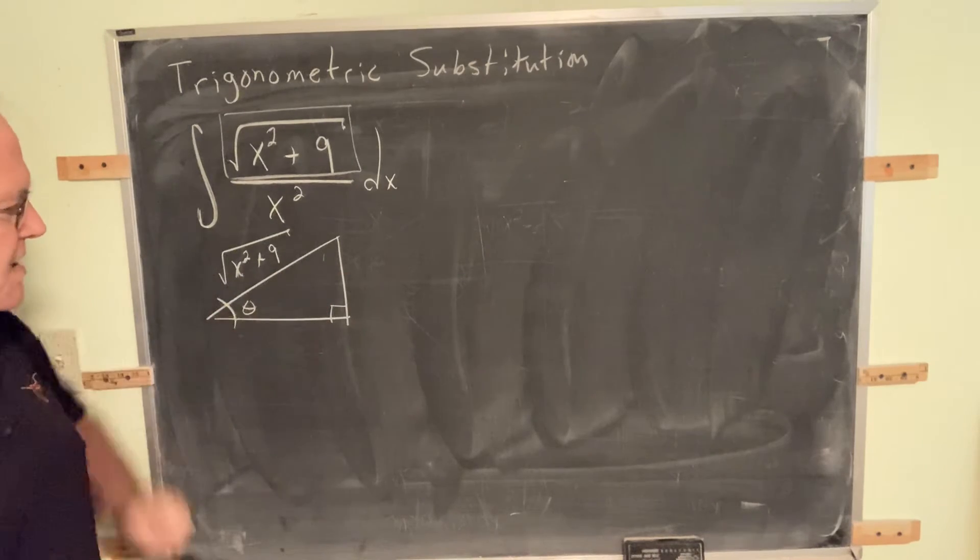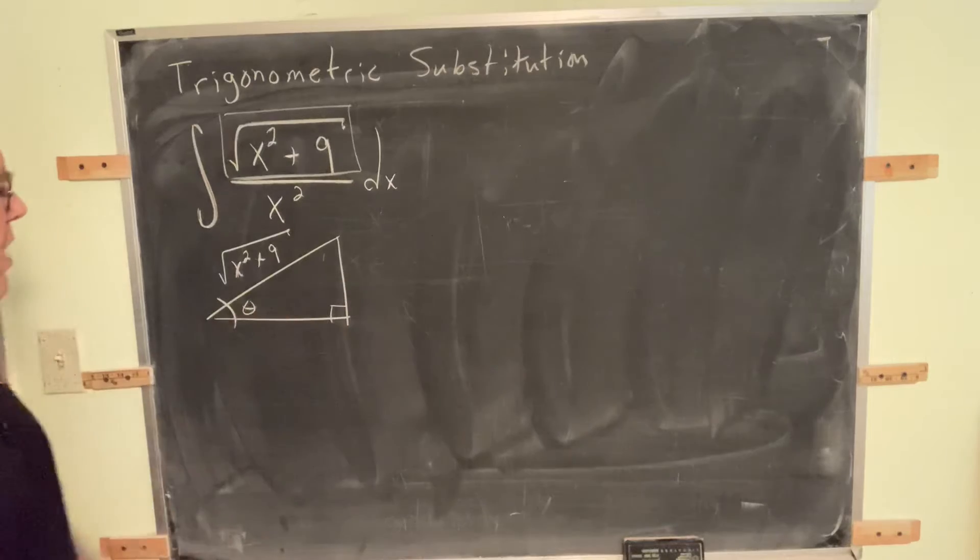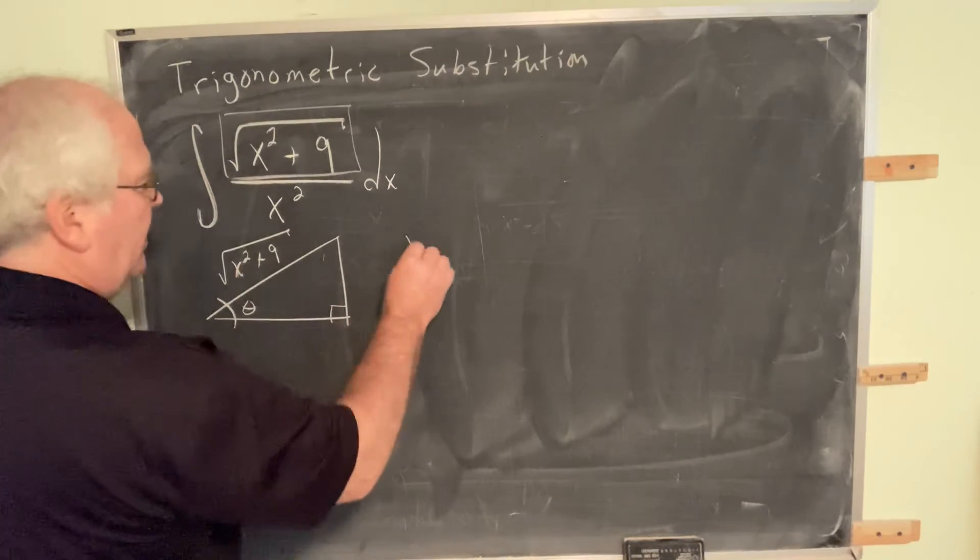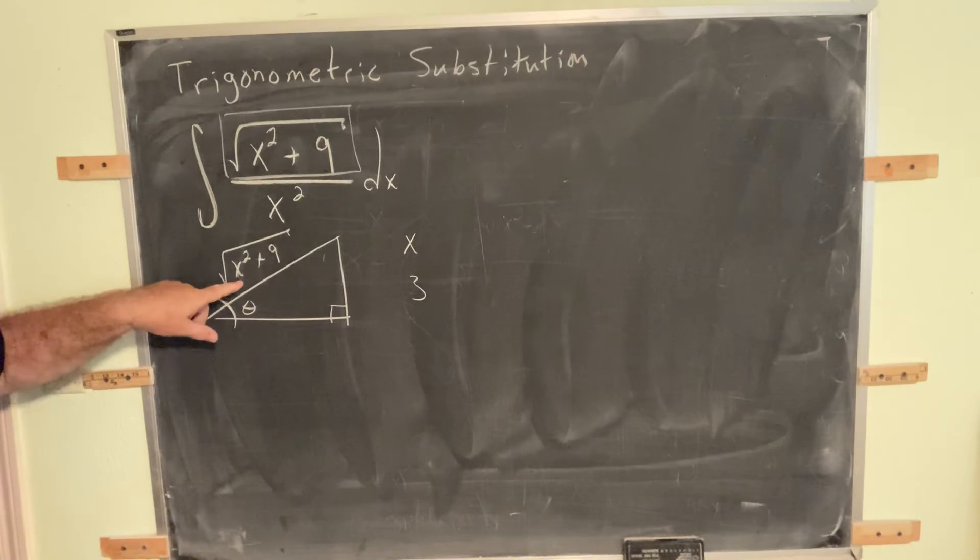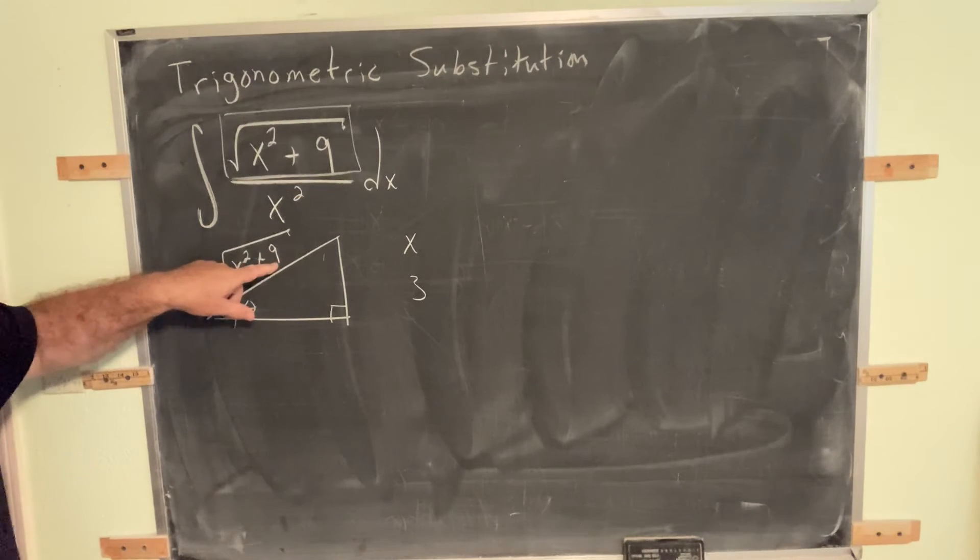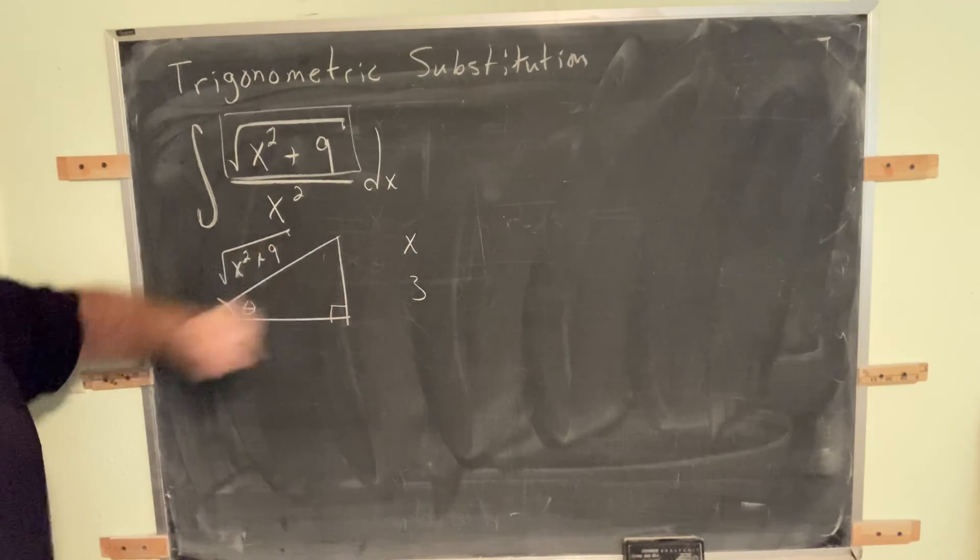We have two other sides yet to label. The question is, which one is the vertical side? What are our two options? Our two options are either x or 3. That's what's getting squared here is x. What's getting squared here is 3. So one of these sides needs to be 3, and one of these sides needs to be x.